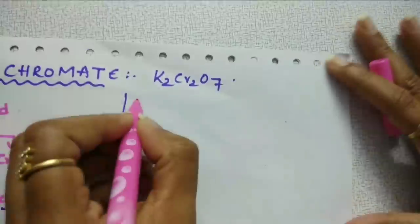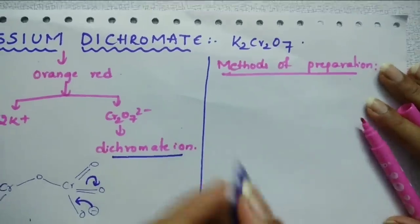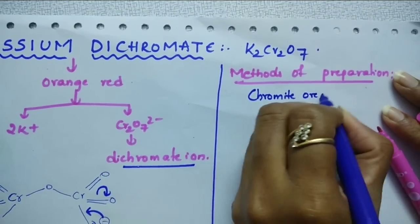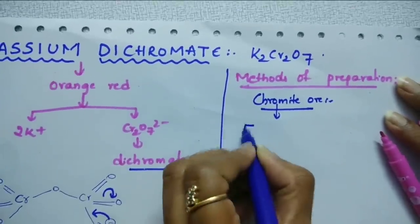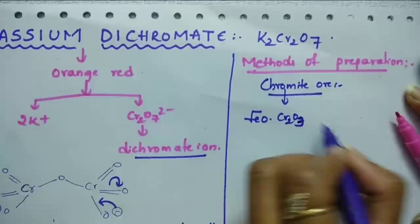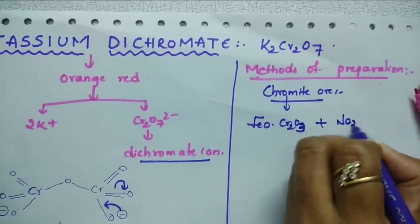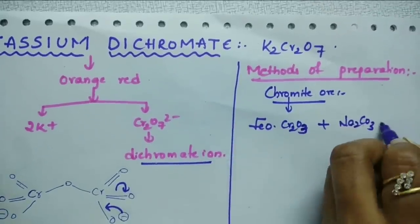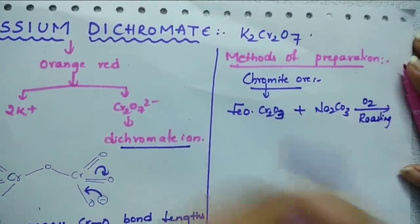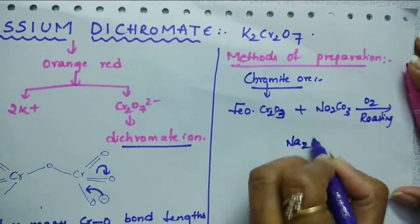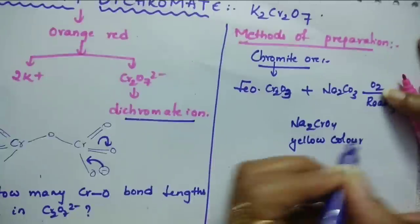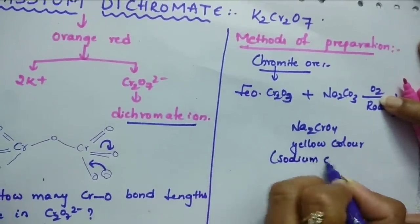Let us see the methods of preparation. Potassium dichromate is prepared from chromite ore, which is a very important method. The formula of chromite ore is FeO·Cr₂O₃. This chromite ore is made to react with sodium carbonate — roasting means heating the ore with sodium carbonate in the presence of oxygen. Whenever we do roasting, this chromite ore converts into sodium chromate, Na₂CrO₄. This is a yellow colored compound. What is this? This is sodium chromate.